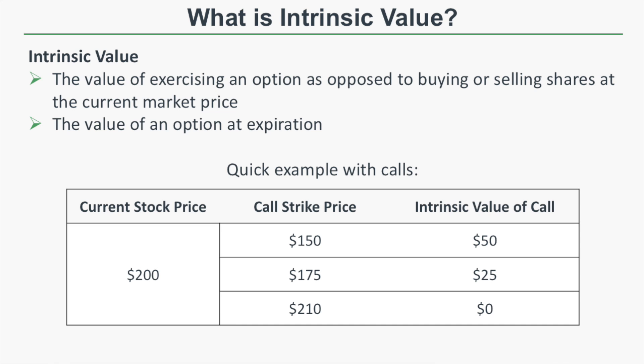Looking at an example with calls: if the current stock price is $200 and we have a call with a strike price of $150, the intrinsic value of that call is $50, because buying shares at $150 versus $200 is worth $50. A call with a strike of $175 has $25 of intrinsic value. If the strike price is $210, there's no value in buying at $210 when you could buy at $200, so the intrinsic value is zero.